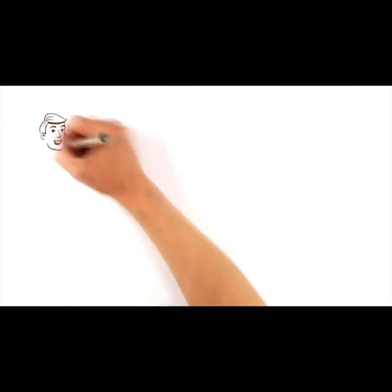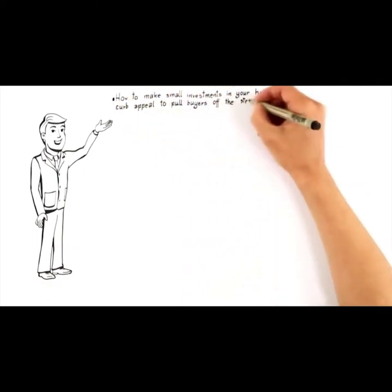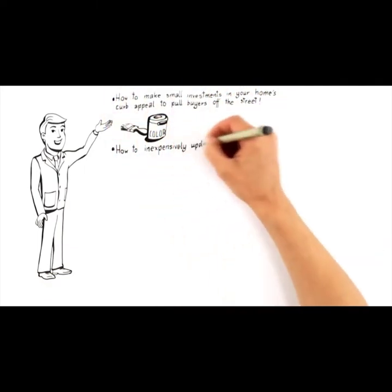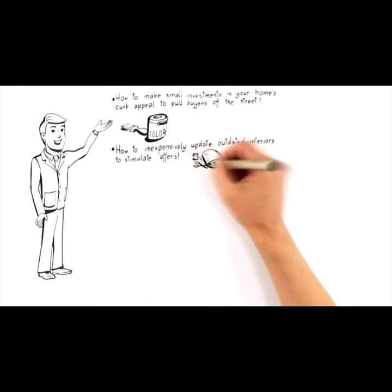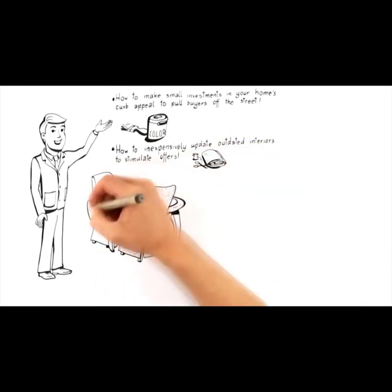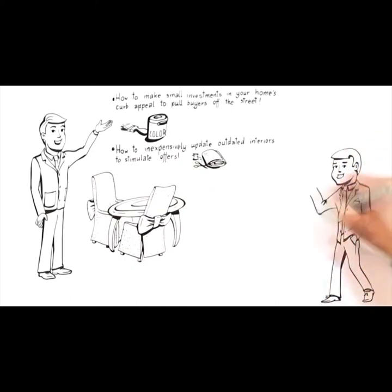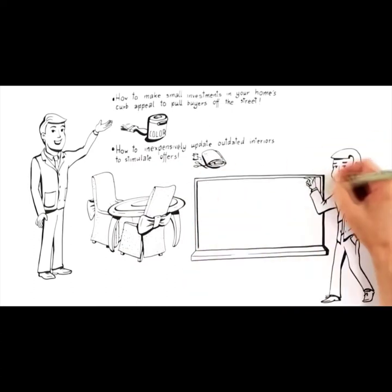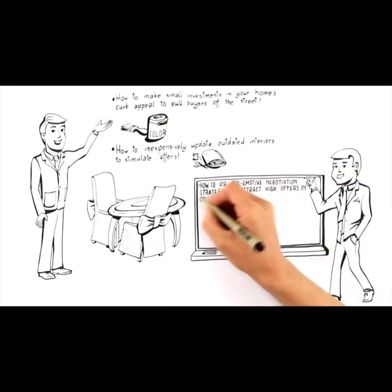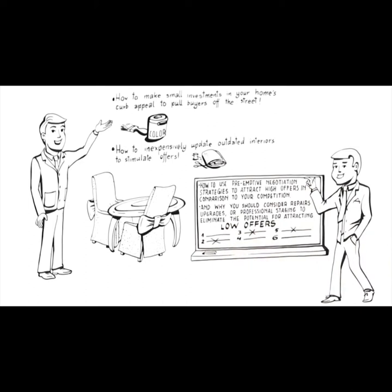This means the advice you should receive to attract buyers like this must include how to make small investments in your home's curb appeal to pull buyers off the street, how to inexpensively update outdated interiors to stimulate offers, how to use preemptive negotiation strategies to attract high offers in comparison to your competition, and why you should consider repairs, upgrades, or professional staging to eliminate the potential for attracting low offers.